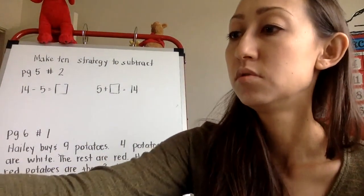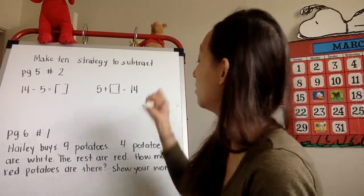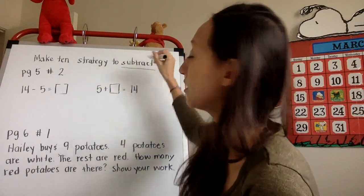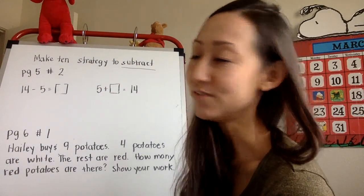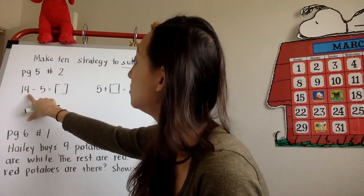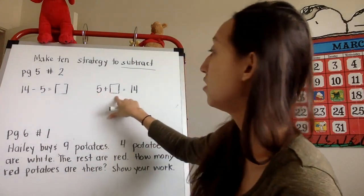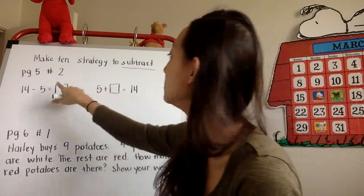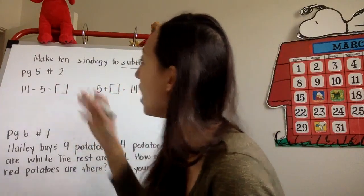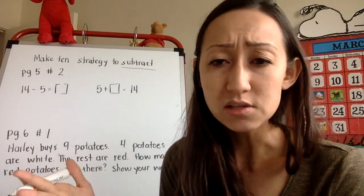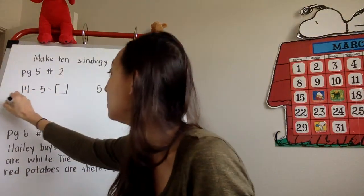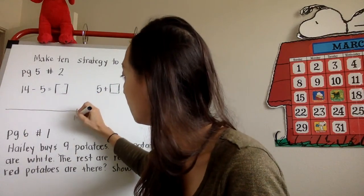We're going to apply the make 10 strategy today, but we're going to apply it to subtraction. And so how do we do that? So one of the problems on page five, number two, is to do 14 minus 5, and 5 plus what equals 14. This is obviously a fact family because I see some similar numbers. So how can I use the make 10 strategy when solving for 14 minus 5? Well, I can show it on a number line. So if I start at 14, I want to make 10.